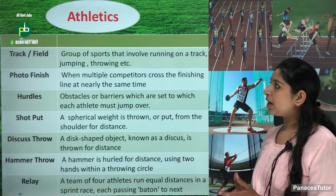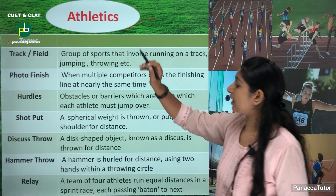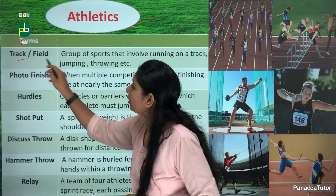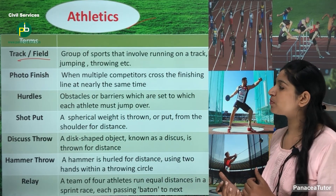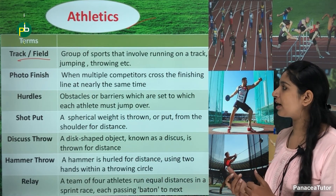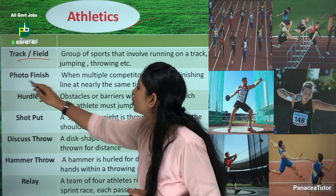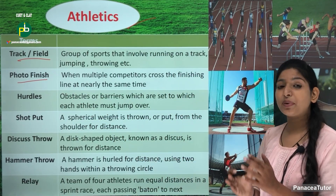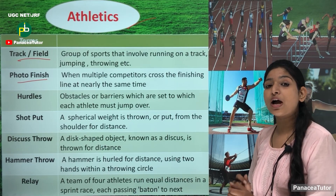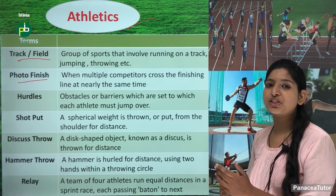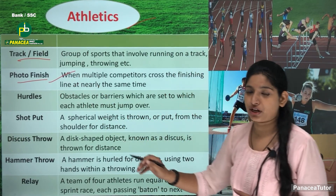We have some important terms related to athletics. First is track and field — track and field is a group of sports involving jumping, throwing and running on the track. Next is photo finish — where two competitors cross the finish line at the same time and there is no clarity of who crossed first. We call this situation photo finish.